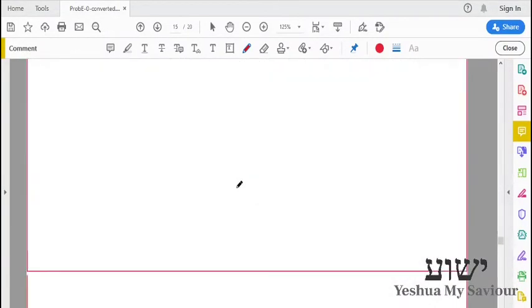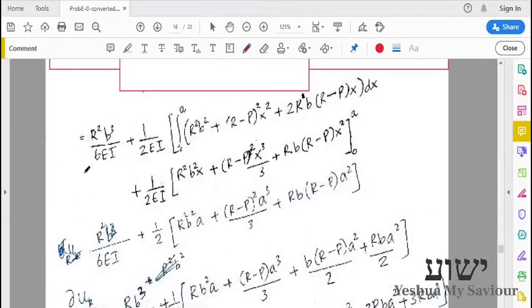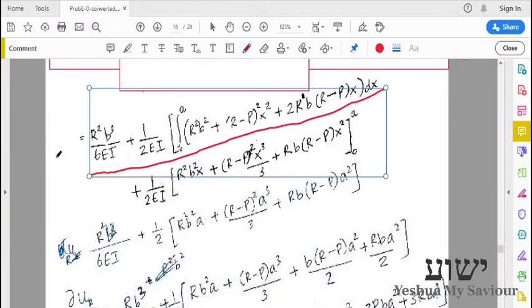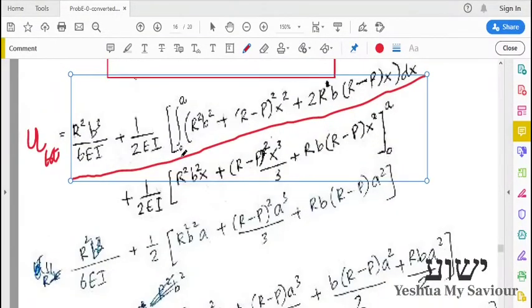We will be left with the total strain energy, U_total. This one is U_total, which equals R squared b cubed over 6EI plus the other terms.